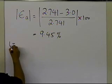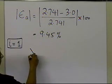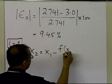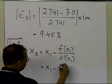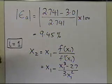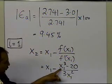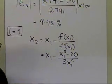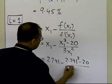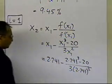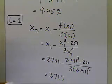Let's go ahead and see what we get for i equal to 1, which is my next iteration. I'll get x2 is equal to x1, minus the value of the function at x1, divided by f prime of x1. That equals x1, minus x1 cubed minus 20, divided by 3x1 squared. Substituting x1 equal to 2.741: 2.741 minus 2.741 cubed minus 20, divided by 3 times 2.741 squared, and the value I get is 2.715 for the estimate of the root of the equation.